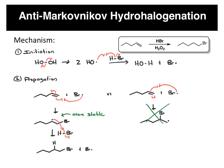So this is how the product is formed. Being a radical mechanism, we do have a third step, which is termination. This is when two radicals come together and form a bond. For example, if two bromine radicals happen to run into one another, they come together and form Br₂.